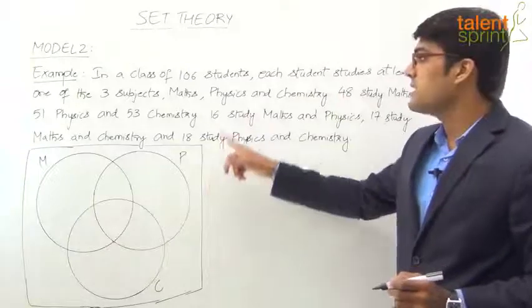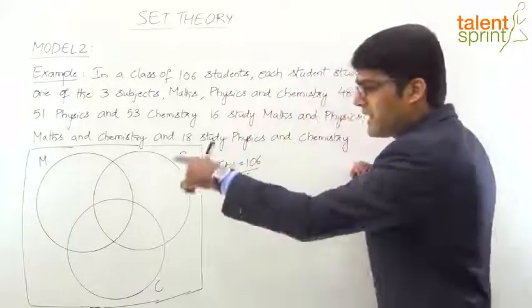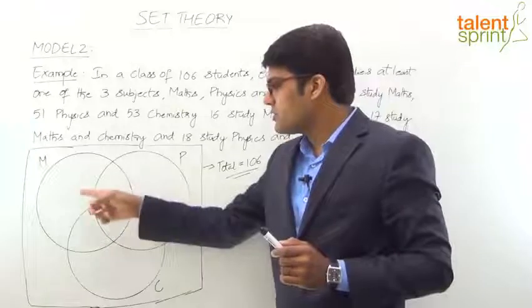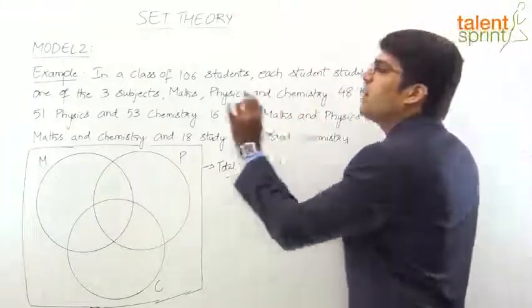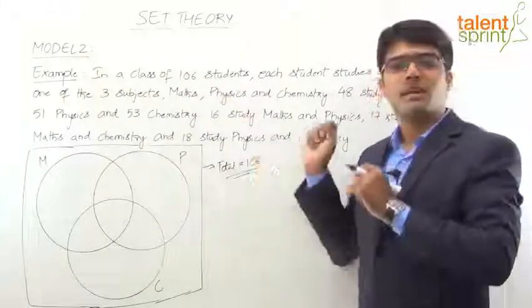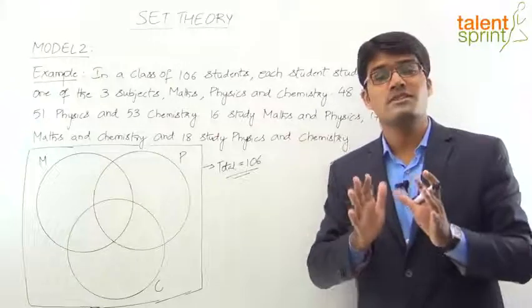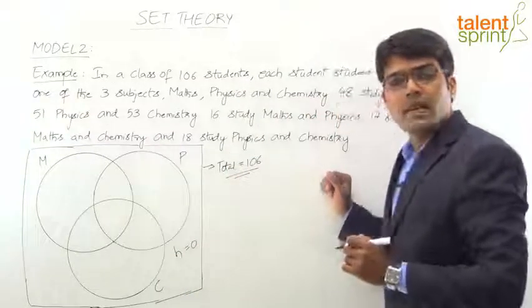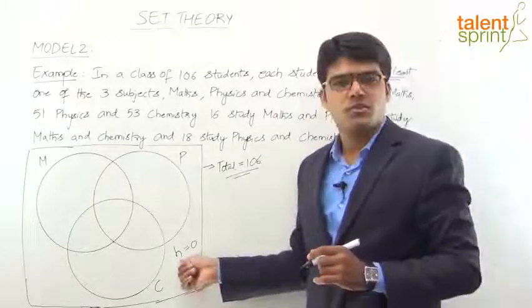The universal set encompasses all 3 sets. Since each student studies at least one of the 3 subjects — Maths, Physics and Chemistry — the outside region, which we denote as H, is equal to 0. There is no student outside all three circles. So H = 0. This is the first conclusion from the problem statement.